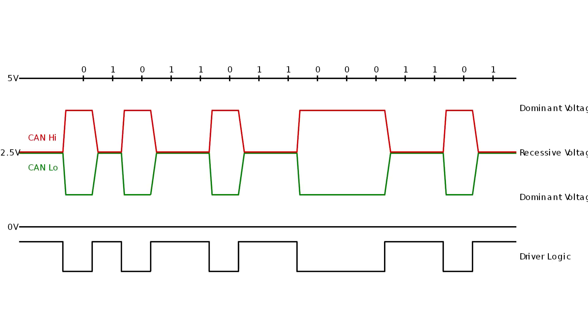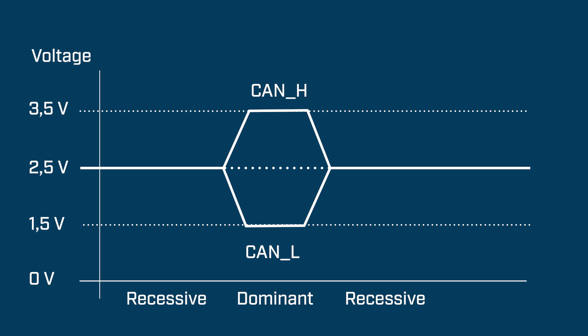What should I be looking for? Well, with your multimeter, check the recessive levels on both CAN high to CAN ground and CAN low to CAN ground — they should be about 2.5V. Using an oscilloscope, the dominant level on CAN high to CAN ground should be around 3.5V, and on CAN low to CAN ground about 1.5V.